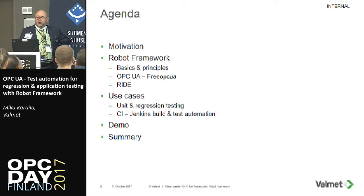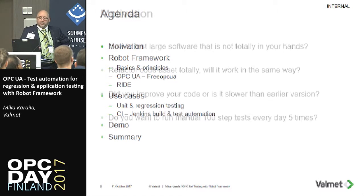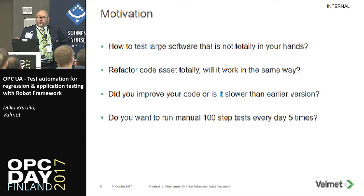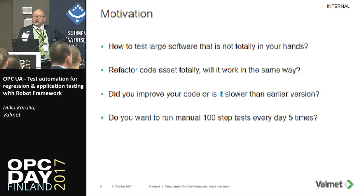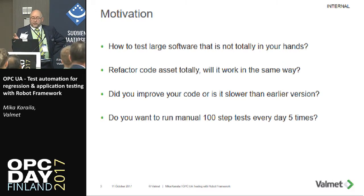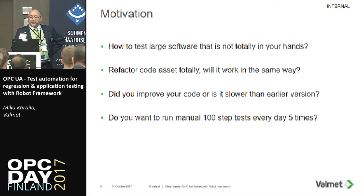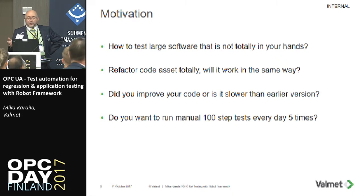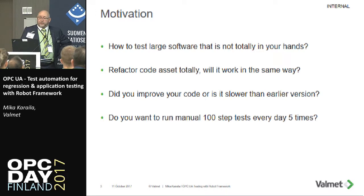These are quite common cases when you are building large software. If you are improving software, will it come slower or will it actually function anymore in the same way as the earlier version? If you want to run manual tests — 100 steps — do you have people who can repeat it every day, five times? You are making a new build and then it should be retested again and again. So it's useless to make it manually. This is the motivation why I'm introducing the Robot Framework.